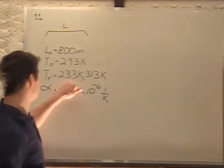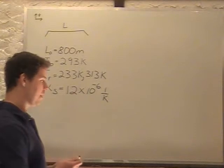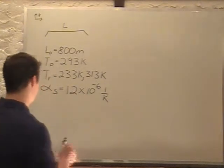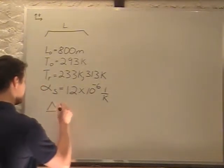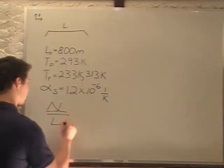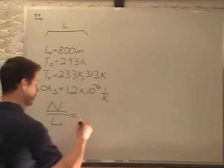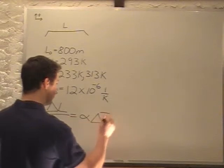So we'll start with its low temperature. The formula for expansion is delta L over L0 equals alpha delta T.